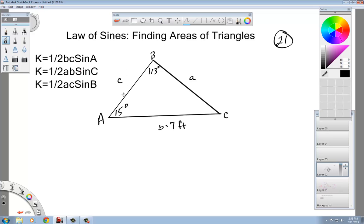To do that, we first need to find this angle right there, this little c. So if we add these two together, 113 plus 15 is going to be 128. And if we subtract that from 180, we're going to get 52 degrees for C.